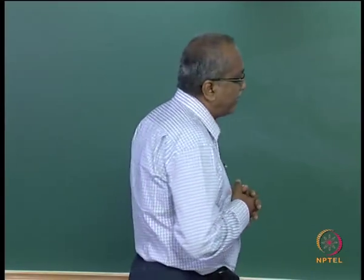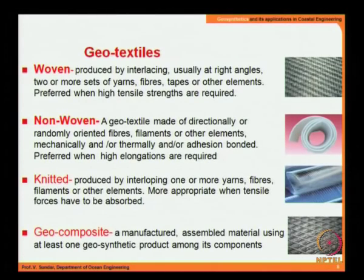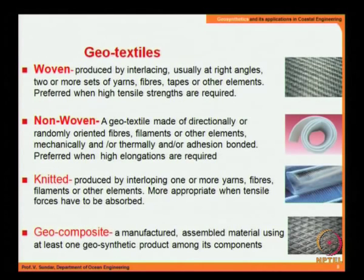In the case of woven geotextiles, these are produced by interlacing — usually at right angles — two or more sets of yarn, fibers, tapes, or other elements of geosynthetic type. Woven geotextiles are preferred where high tensile strengths are required. A typical picture of a woven geotextile is shown on the right side.